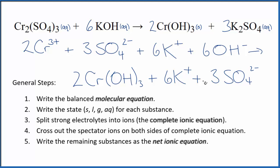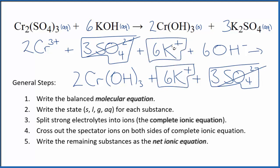Now that we have the complete ionic equation, we can cross out spectator ions on both sides. In the reactants, I see three sulfate ions, and in the products, I have three sulfate ions. These are spectator ions, so we cross those out. Six potassium ions on each side—let's cross them out too.